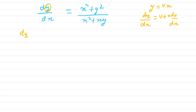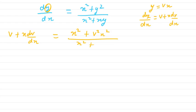Substituting into the equation: in place of dy/dx we put v + x·dv/dx, and in place of y we put vx. So the right side becomes x² + v²x² divided by x² + x²v. Taking x² common, we get 1 + v² divided by 1 + v.